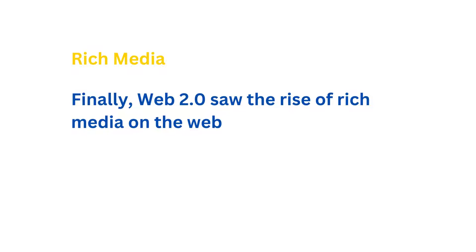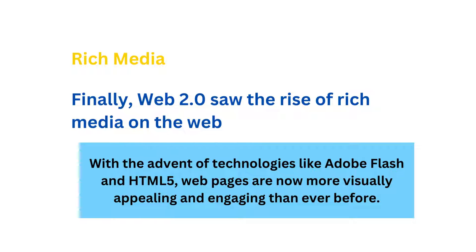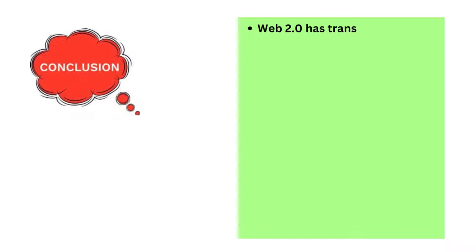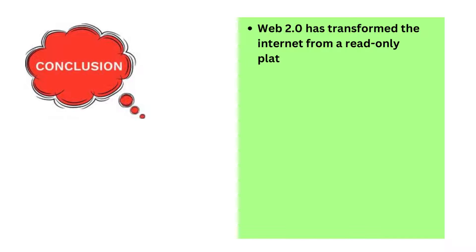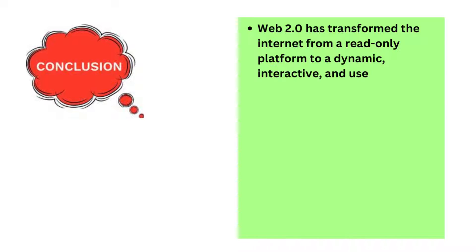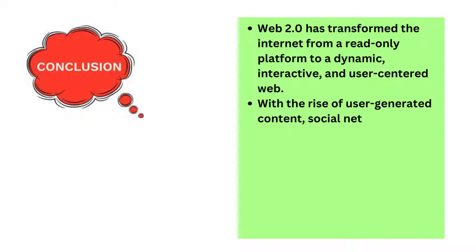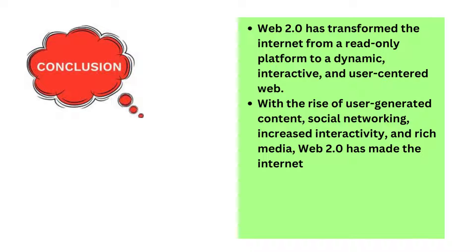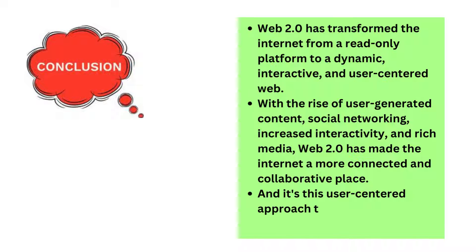Rich media: finally, Web 2.0 saw the rise of rich media on the web. With the advent of technologies like Adobe Flash and HTML5, web pages are now more visually appealing and engaging than ever before. In conclusion, Web 2.0 has transformed the internet from a read-only platform to a dynamic, interactive, and user-centered web. With the rise of user-generated content, social networking, increased interactivity, and rich media, Web 2.0 has made the internet a more connected and collaborative place. And it's this user-centered approach that sets it apart from its predecessor, Web 1.0.